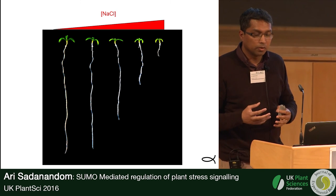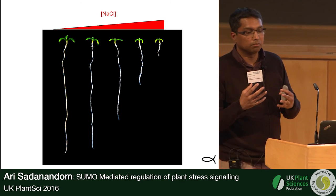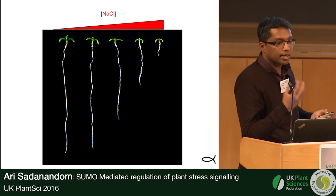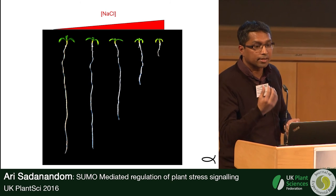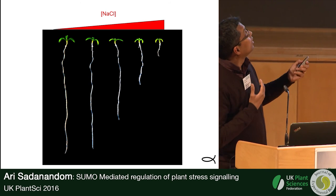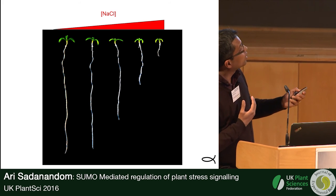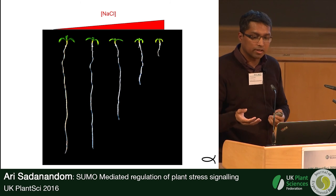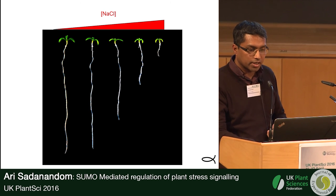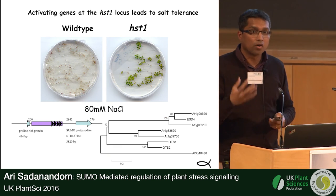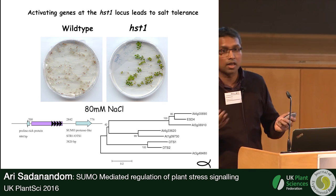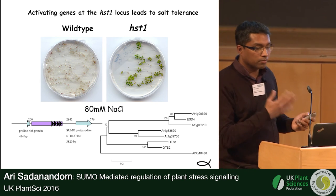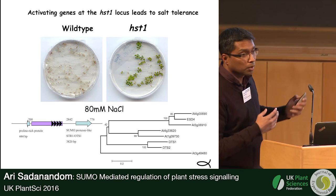We decided to use Arabidopsis as a tractable system. We can regulate growth by increasing the amount of salt on an agar plate — it's a bit artificial but gives us a handle to get into it and then move to crops. As you increase the amount of salt you reduce the growth, giving a neat system. We used a series of activation tag lines and screened for mutants that grow in salt where the wild type doesn't. This one we called HST1 — Highly Salt Tolerant 1 — which can germinate and grow on plates where wild type doesn't.